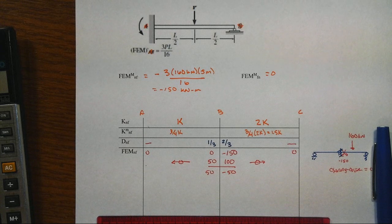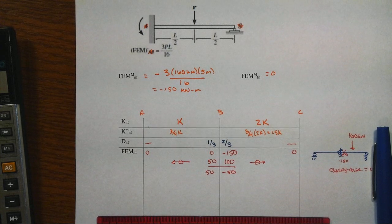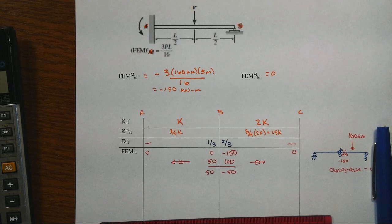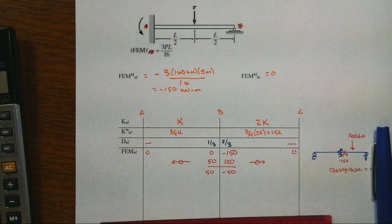And we will use it again in another example. That is example 5, where we don't have a pinned end at the left. Instead, we have a fixed end. We're also going to add a cantilever into the next example.